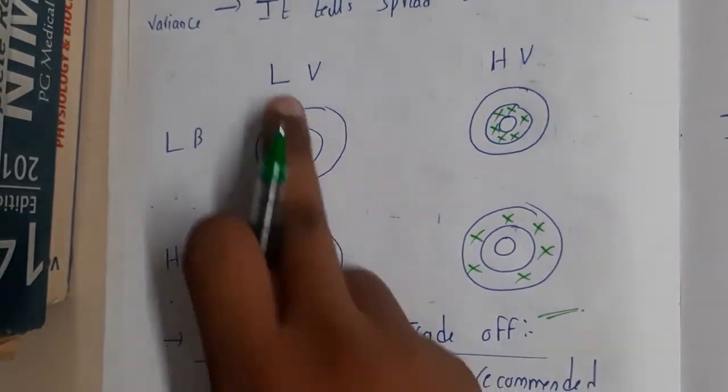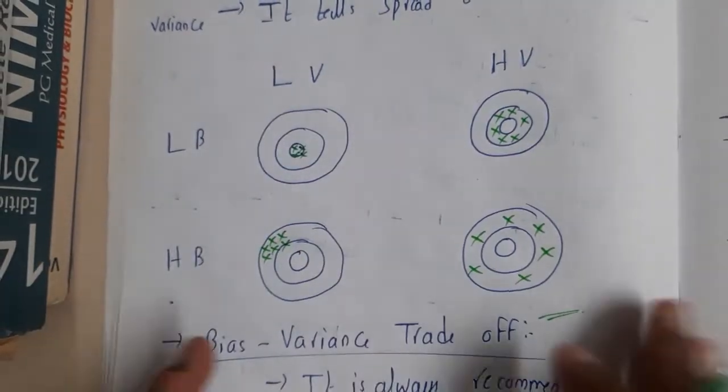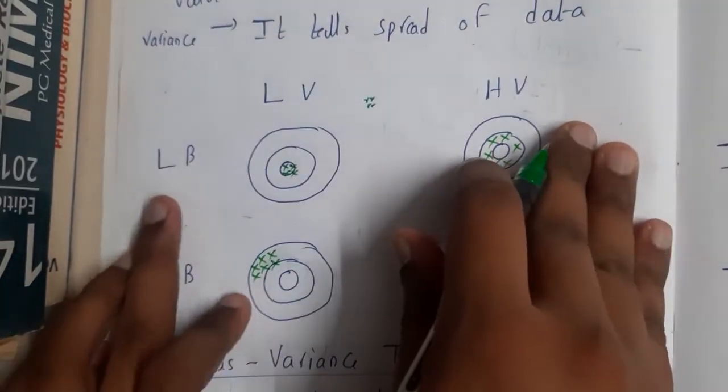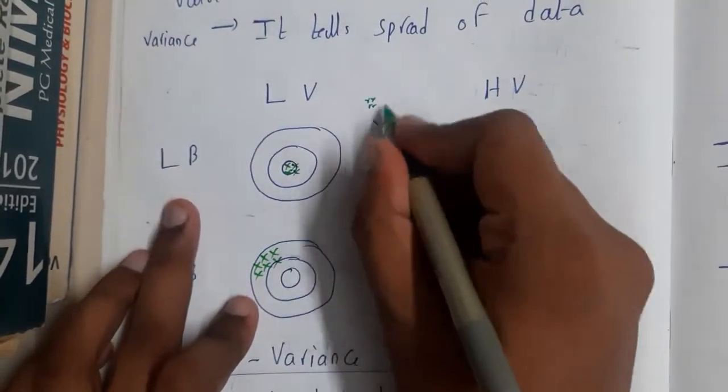If your variance is low, all your items will be close to each other. Similarly, if your bias is low, you are 100% accurate based on our definitions. That's why all your values are inside the bullseye.